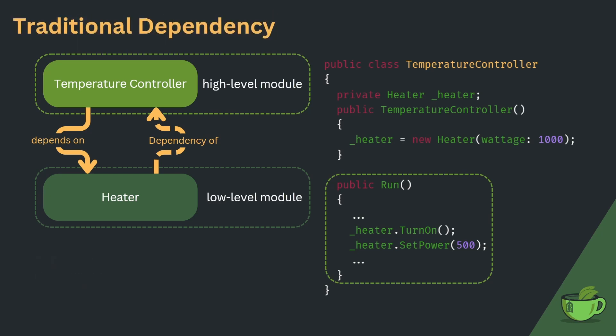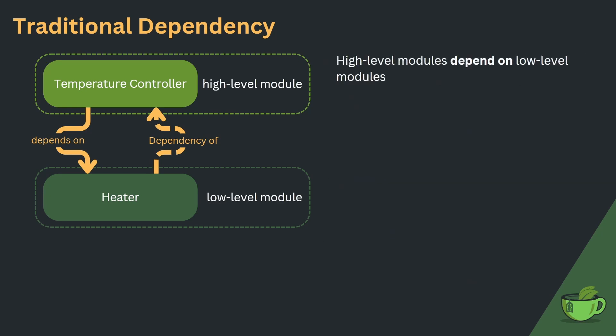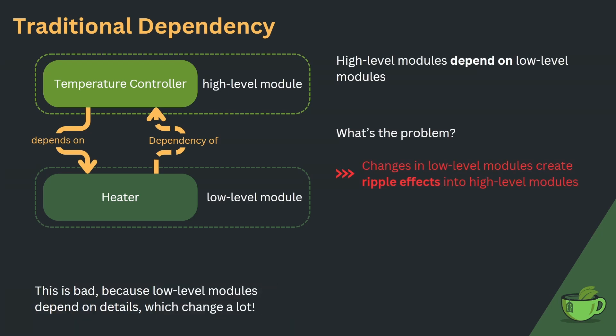The way the code is currently written is what we call traditional dependency. In traditional dependency, high-level modules depend on low-level modules. What's the problem? As soon as the low-level module changes, we get ripple effects into high-level modules due to the dependency. It is in the nature of how software works that low-level modules are concerned with details, while high-level modules typically focus on orchestration. And details tend to change a lot more than the way we orchestrate our classes.